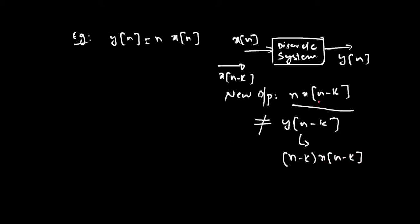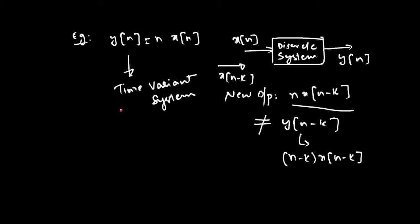This new output, n into x of n minus k, is not equal to y of n minus k. So if you delay the input signal, the output signal is not delayed, meaning the system depends on time. Hence this is referred to as a time variant system. The same principle applies for continuous time systems, where y of t equals t into x of t.